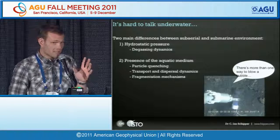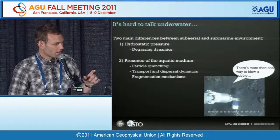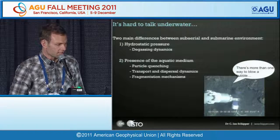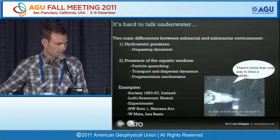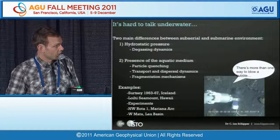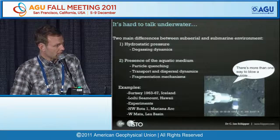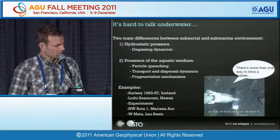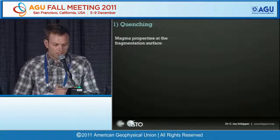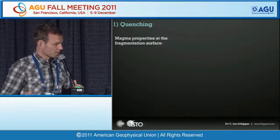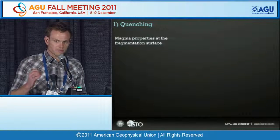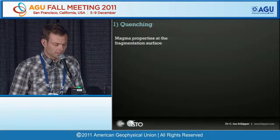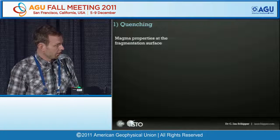Today I'm going to focus on just a few examples of that second group of effects — looking at pyroclasts from Surtsey in the eruption of 1963 to 1967 in Iceland, a few examples from Loihi Seamount, some experiments, and making reference to the only two observed submarine explosive eruptions from Northwest Rota 1 and West Mata.